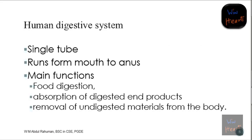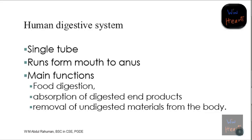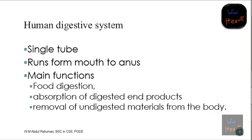The human digestive system is actually a continuous tube - a single tube that starts with our mouth and ends at the anus. It's like a computer system: input, process, and output. If asked to write the main functions of the digestive system, we have food digestion - breaking food down into smaller pieces using mechanical and chemical means.